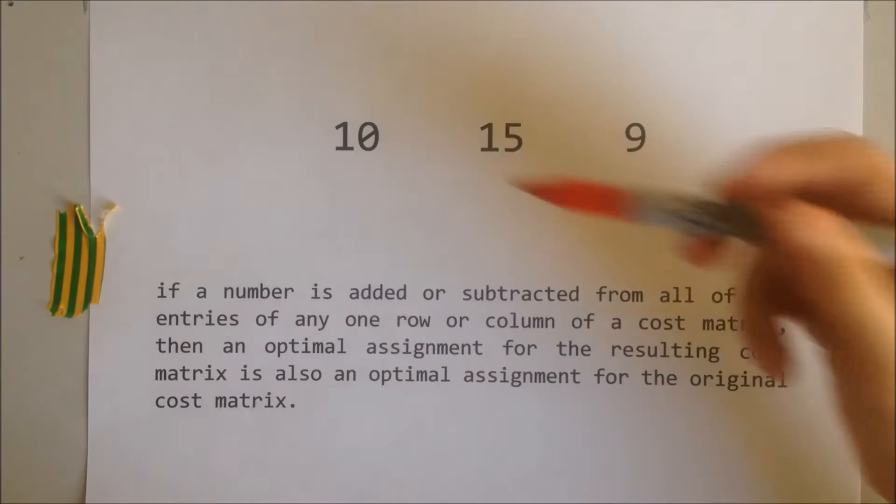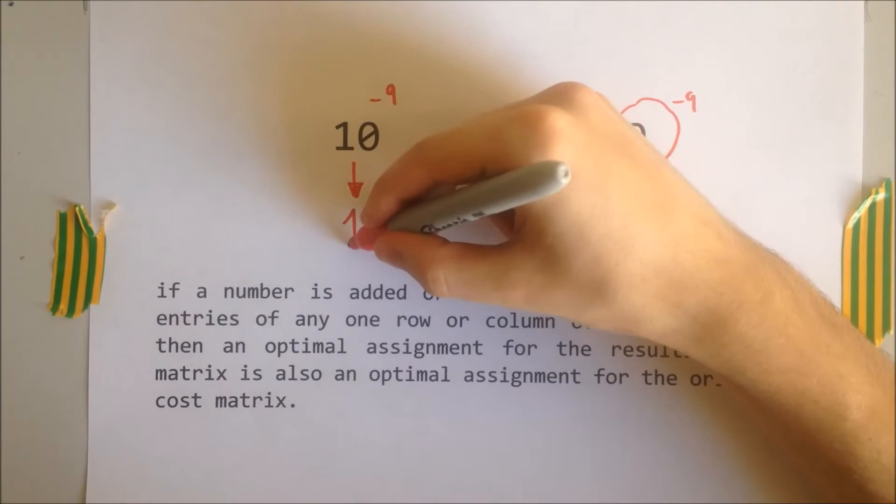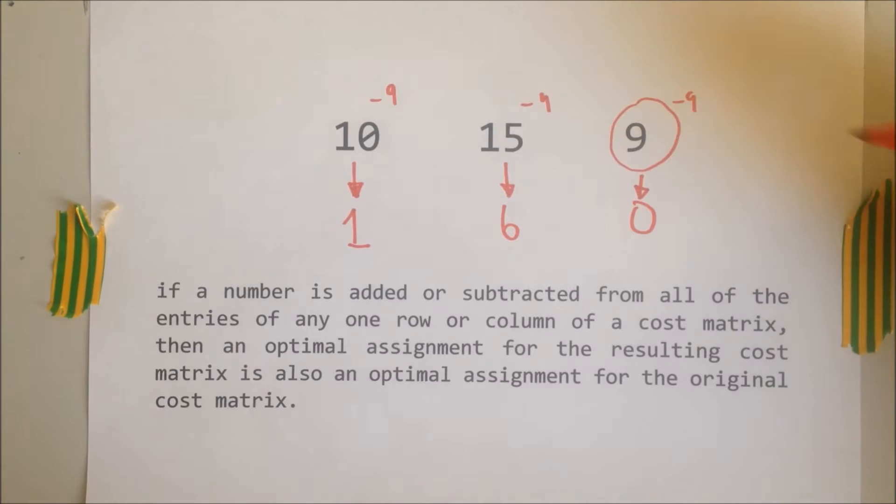This is an explanation of the fundamentals of the algorithm on just one row. Here we have a row of three numbers, 10, 15, and 9, which we need to reduce. To reduce, we take the smallest element in that row and subtract it from itself and the rest, leaving us with this.